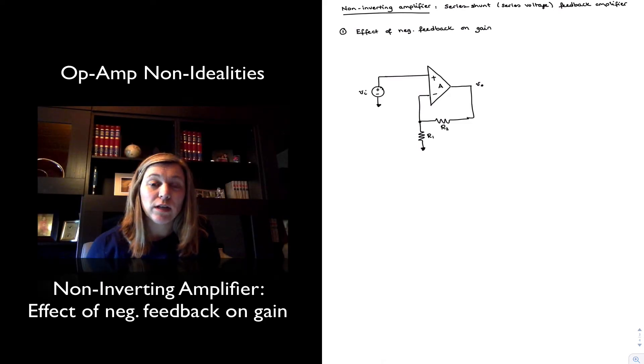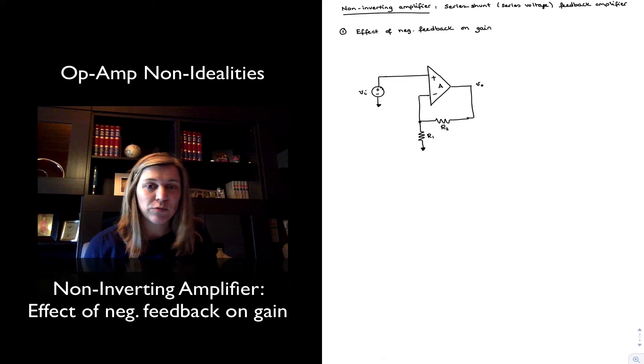Hello. We're going to take a look at a couple of examples of negative feedback circuits and see how the negative feedback affects their parameters: gain, input resistance, and output resistance.